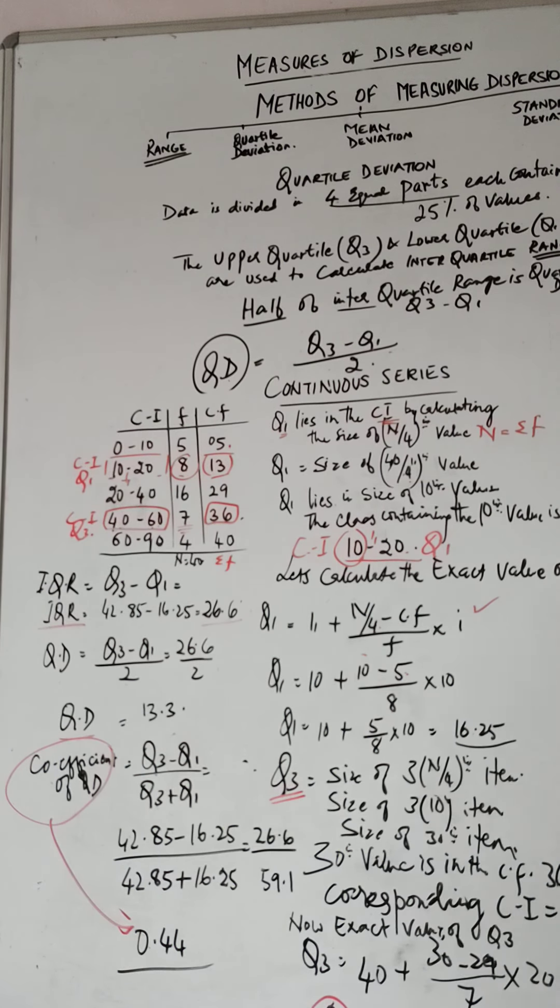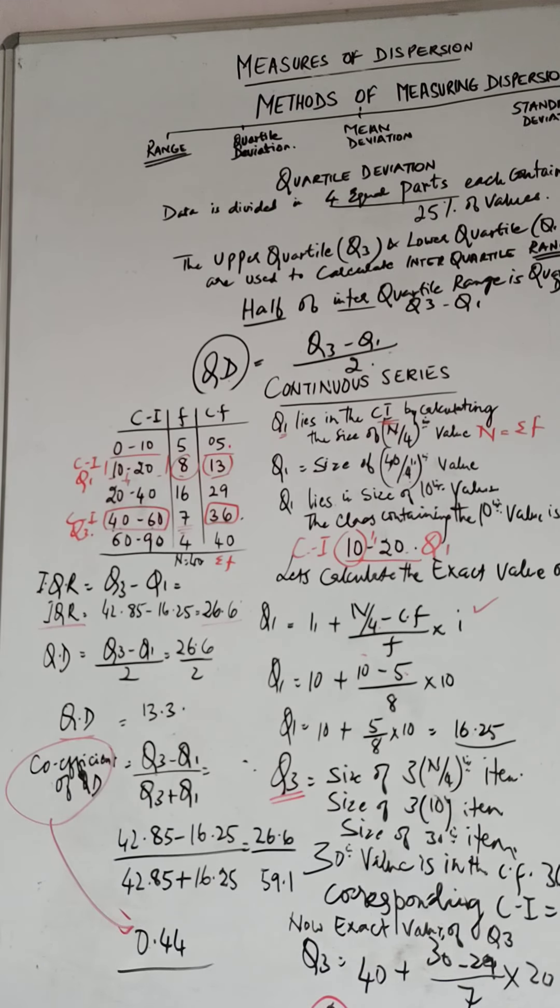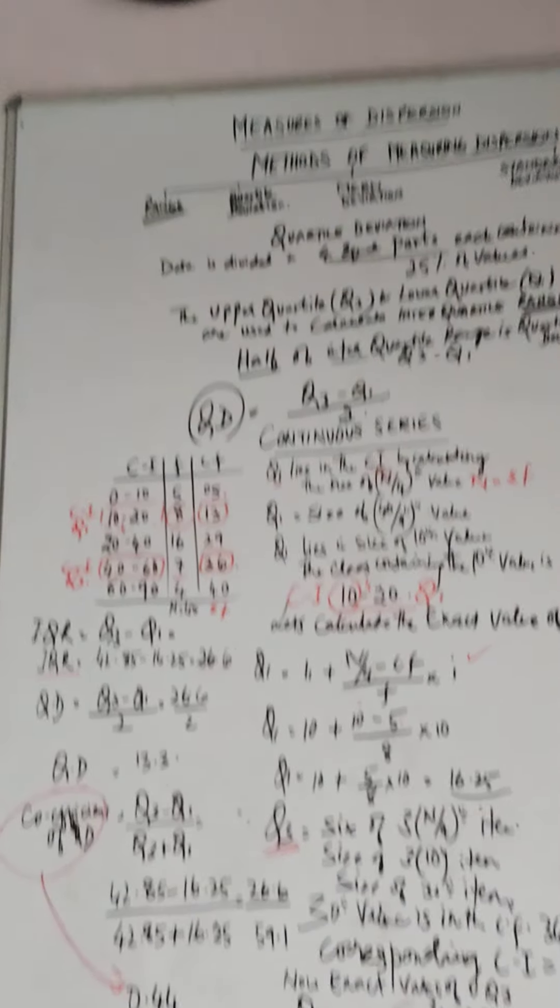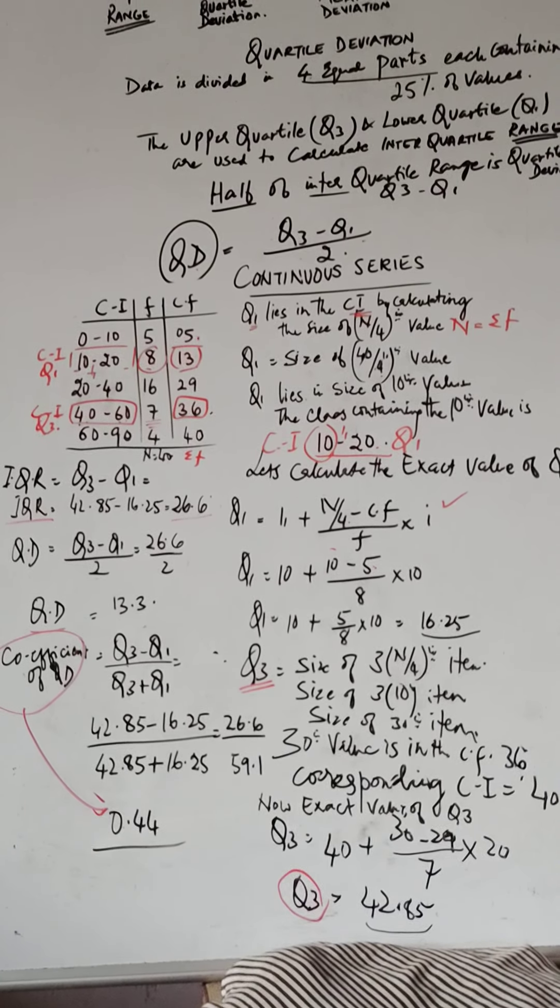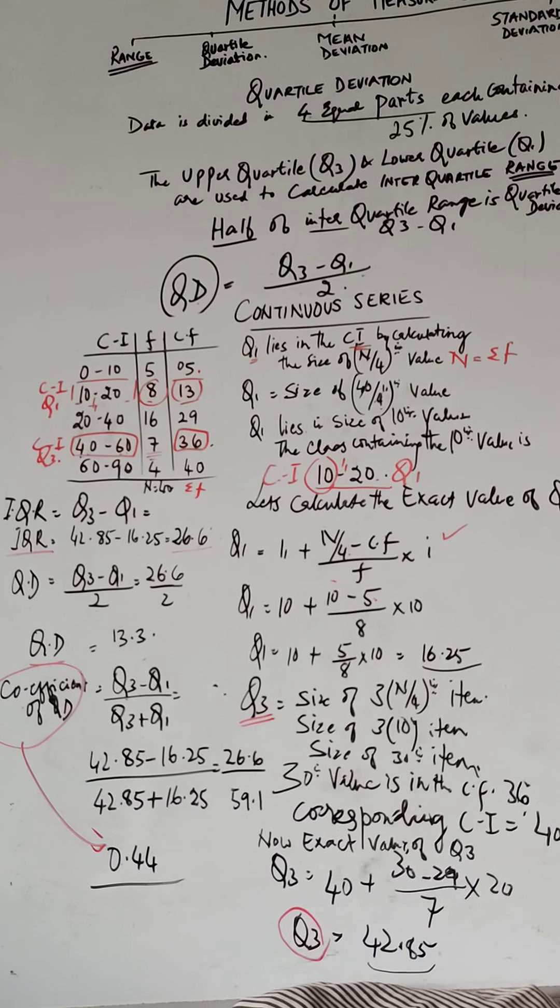Once again, let me repeat: you must do this numerical right now in your notebooks. Go to your books, find out one of the exercises and do that. Do the illustration from your book first and then do it. The more you do, the better you get. That is for sure. With that, we finished with quartile deviation. In the next class, we'll do mean deviation.